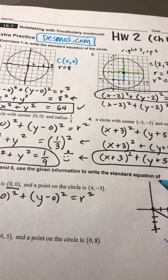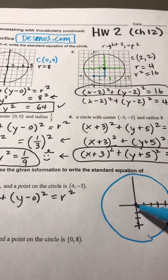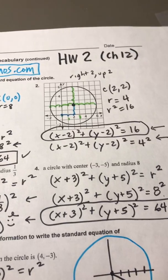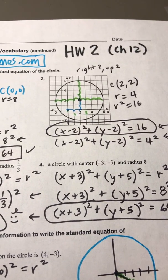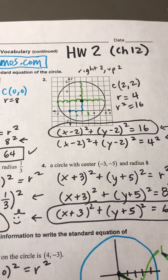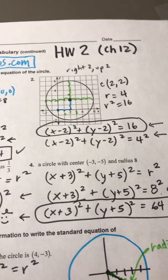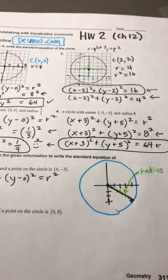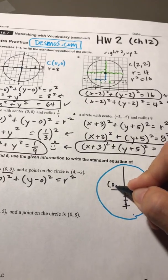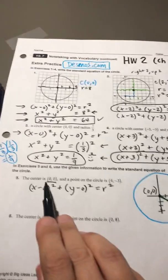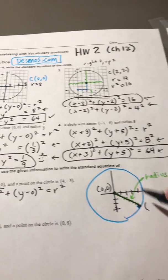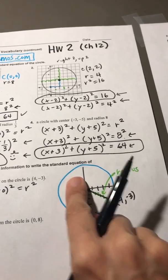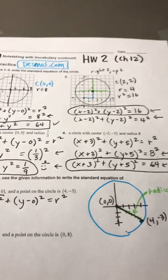So a point on the circle is 4, negative 3. That must mean this is what my picture looks like. The center is there and a point on the circle. So they're kind of telling me, code word, warning, that's a radius. Because any distance from the center to a point on a circle is a radius. If only we knew how to find the distance between two points.